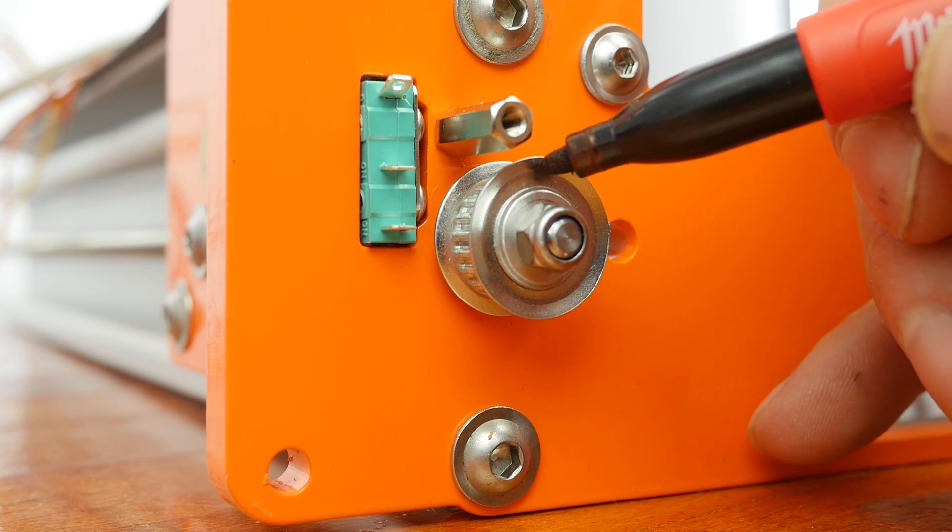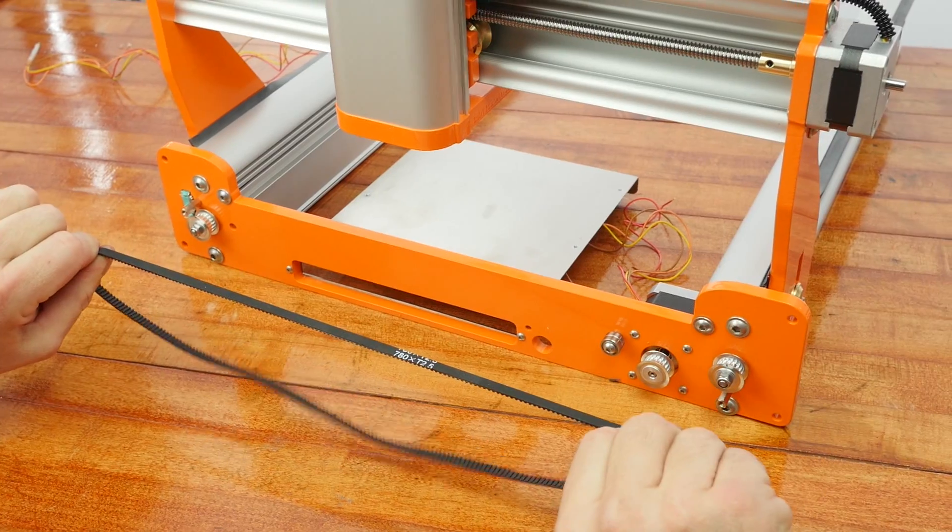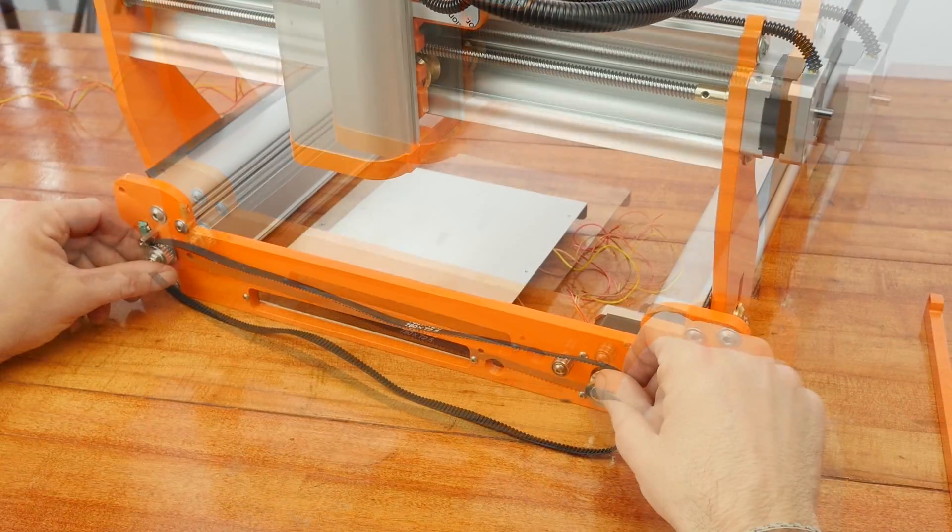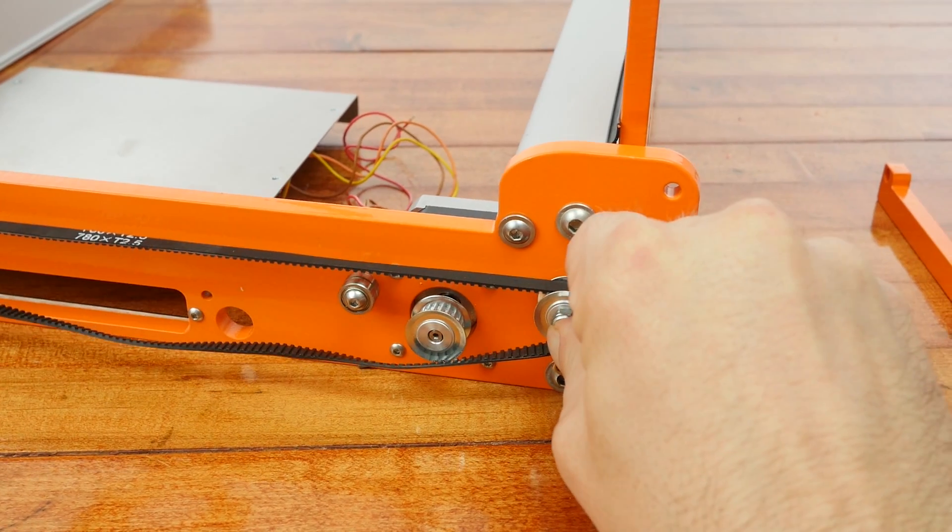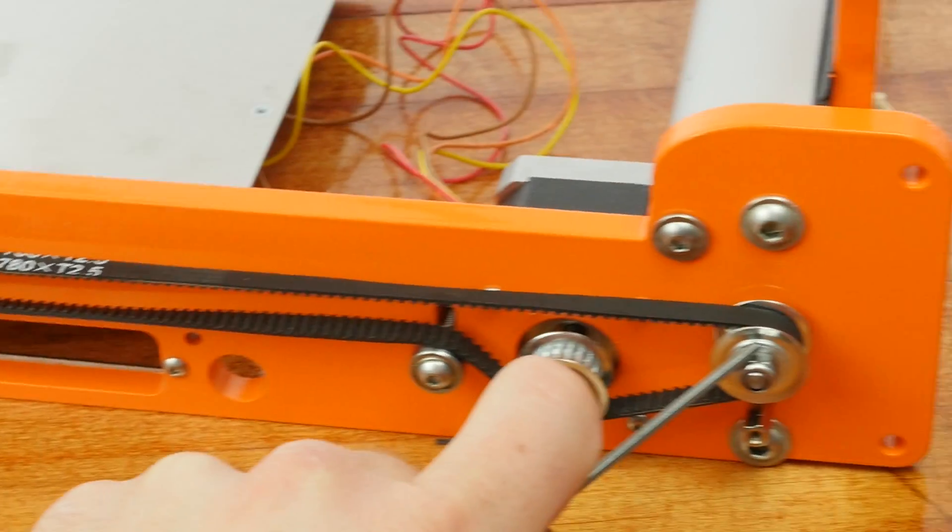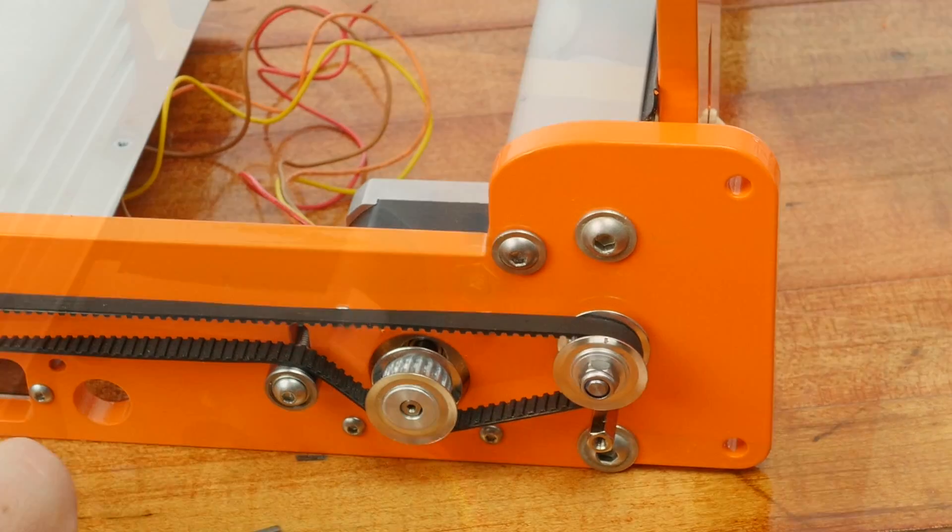Mark the pulleys at the top position to help you reference this spot. With tension on the belt, put the belt over both pulleys. Be sure the pulleys do not turn. It's important that after the belt is installed, the black marks that you made on the pulleys are still at the 12 o'clock position.